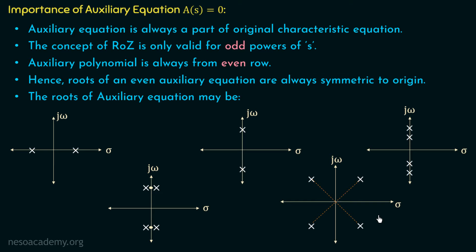These are the possible configurations when roots of the auxiliary equation are symmetric to origin. In case 1, the system is unstable. In case 2, the system is marginally stable. In case 3, the system is marginally stable. In case 4, the system is unstable. In case 5, the system is unstable. One thing is very clear: if a row of zeros exists in the Routh array, the system will not be stable — it can be marginally stable or unstable. Stability depends on the roots of the auxiliary equation. Along with sign changes in the first column of the Routh array, we must also check the roots of the auxiliary equation whenever there is a row of zeros.